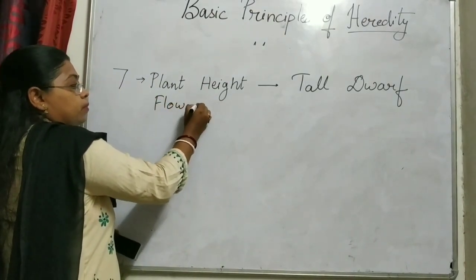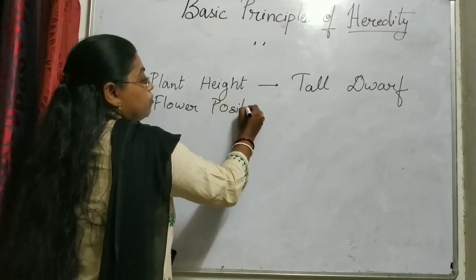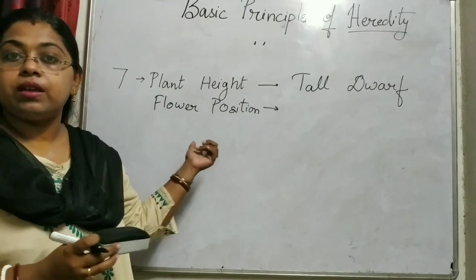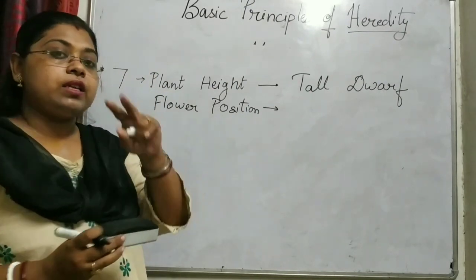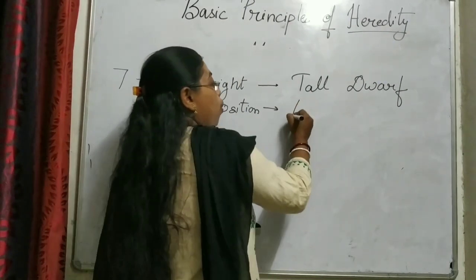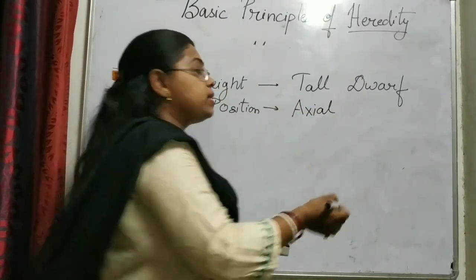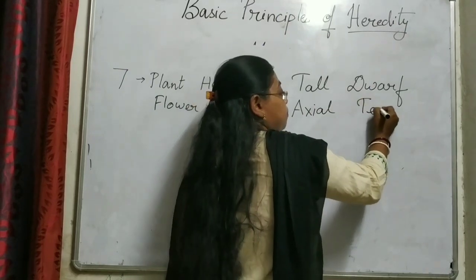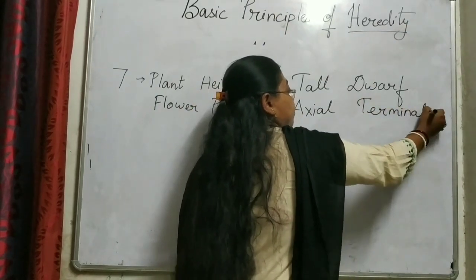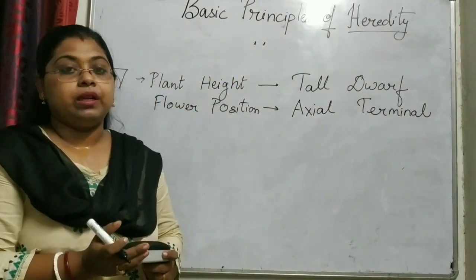The second character was the flower — specifically the position of the flower. Where the flower is located. The flower is present at 2 points: one is axial and another is terminal.